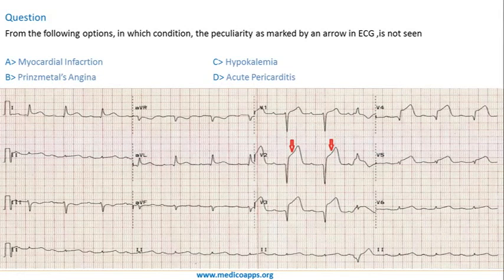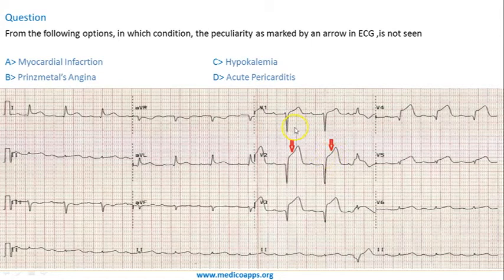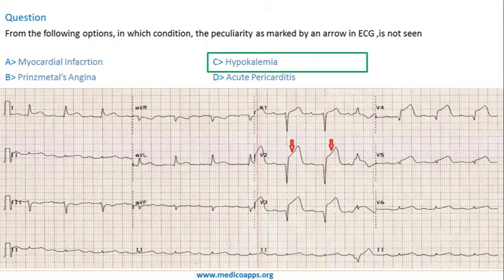A question was asked: in which condition is the peculiarity marked by an arrow in the ECG not seen? The marked peculiarity is ST elevation. ST elevation is not seen in hypokalemia — in fact, hypokalemia shows ST depression and T wave flattening. So the answer is hypokalemia, and this was actually asked in the exam.